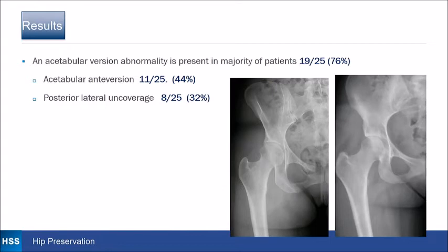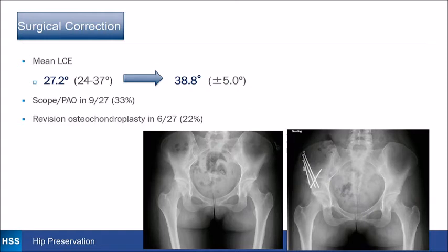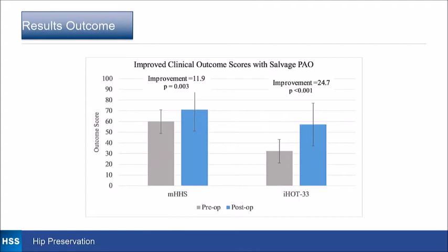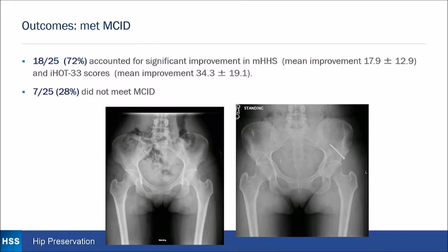The mean lateral center edge angle went from 27.2 to 38.8 degrees. A scope PAO was done in a third of patients and a revision osteochondroplasty in 22%. Overall, the group showed improvement in the modified Harris Hip Score and the iHOT-33. Eighteen of 25 (72%) met MCID in both scores, but 7 of 25 (28%) did not meet MCID.